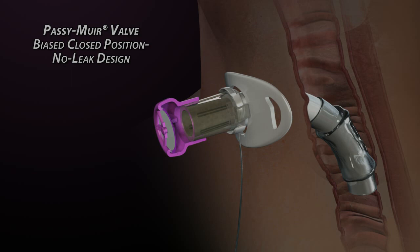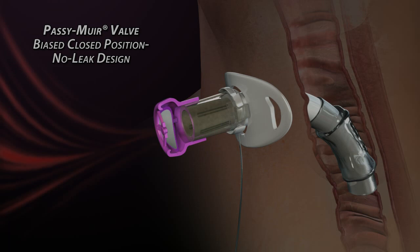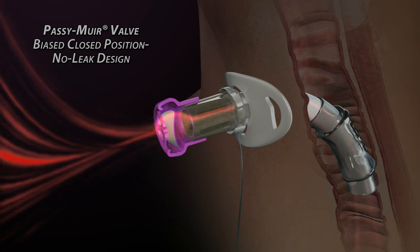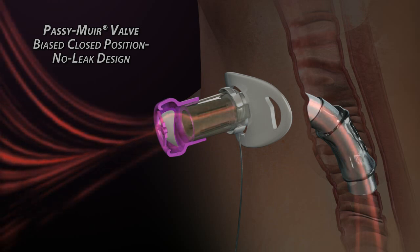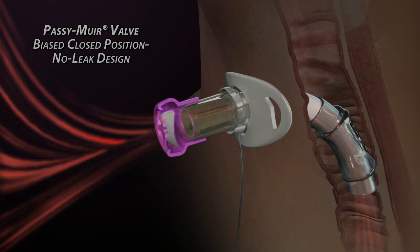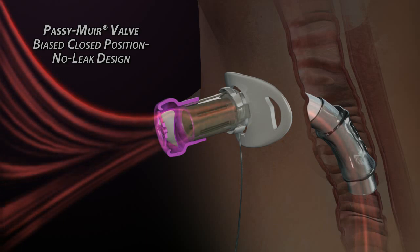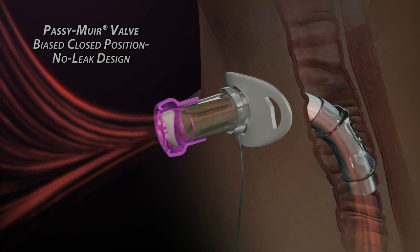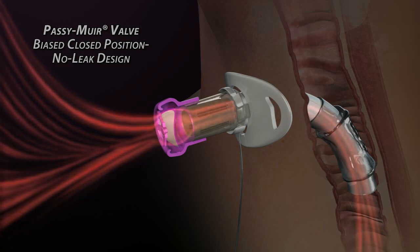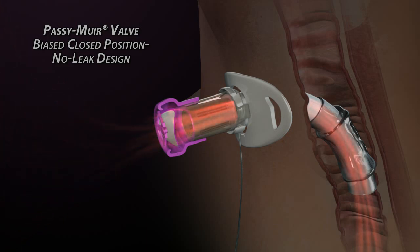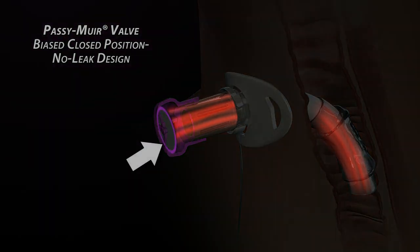When inhalation begins, the membrane easily bends out of the way to allow air passage with minimal resistance. When the inhalation cycle reaches its peak, air stops flowing and the membrane instantly returns to its normal, fully-sealed position. This is the closed position, no-leak feature.